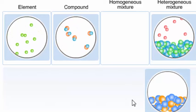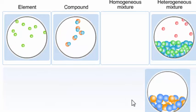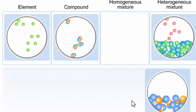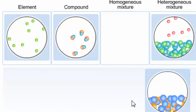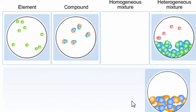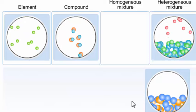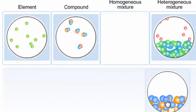And this last example would be an example of a homogeneous mixture, where there appears to be a uniform distribution of blue and orange atoms throughout the sample volume.